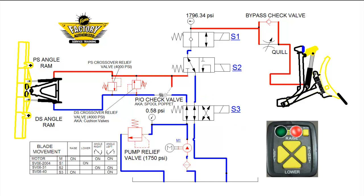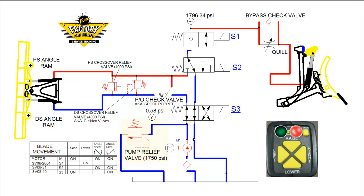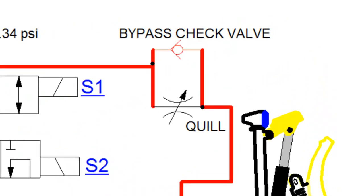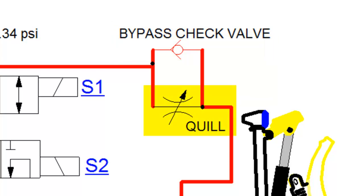There are two crossover relief valves for the angling circuit: the driver side relief valve and the passenger side relief valve. There is one main pump relief valve, one pilot operated check valve — also known as a PO check valve or spool poppet valve — one bypass check valve, and one quill.